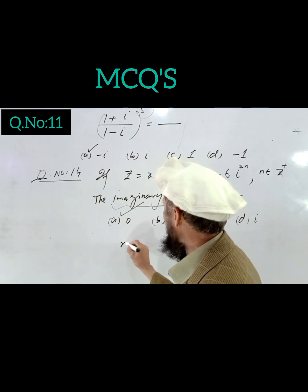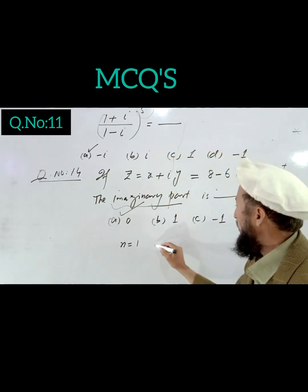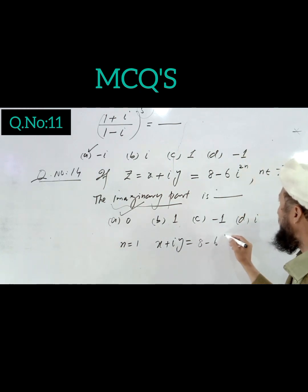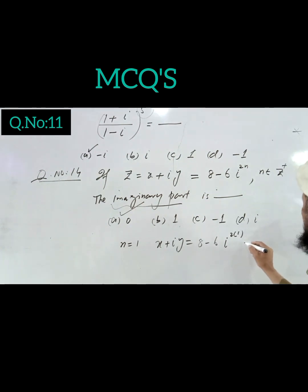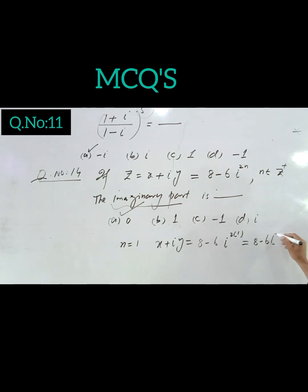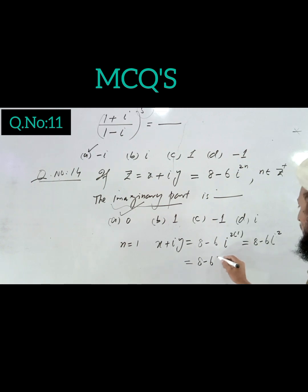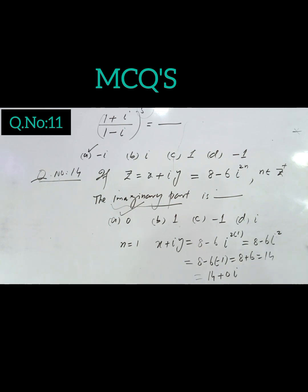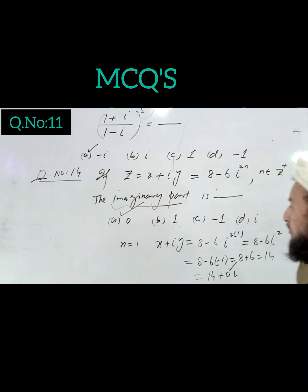Putting n equals 1 in x plus iota y equals (8 minus 6 iota)^1, the result is 8 minus 6 iota squared. Since iota squared equals minus 1, we get 8 plus 6 equals 14. We write this as 14 plus 0 iota, so the imaginary part is 0.